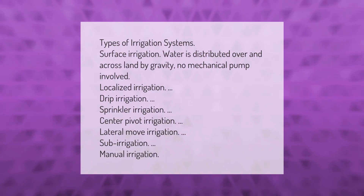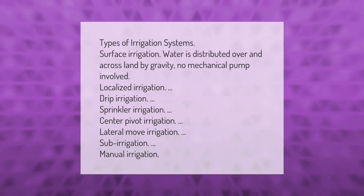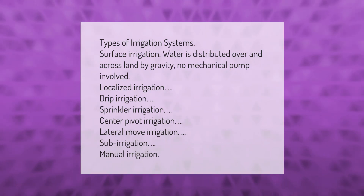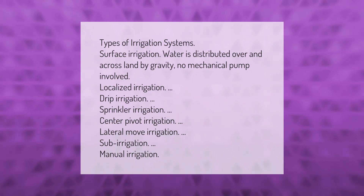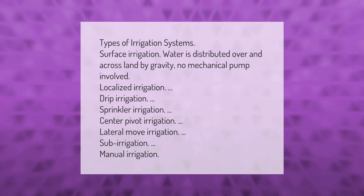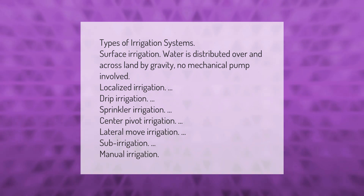Types of irrigation systems include: surface irrigation, where water is distributed over land by gravity with no mechanical pump involved; localized irrigation; drip irrigation; sprinkler irrigation; center pivot irrigation; lateral move irrigation; sub-irrigation; and manual irrigation.